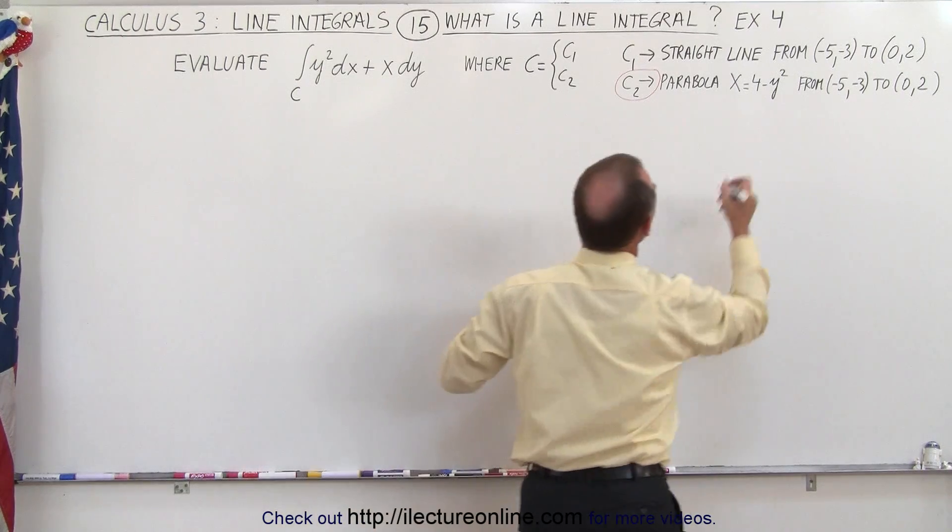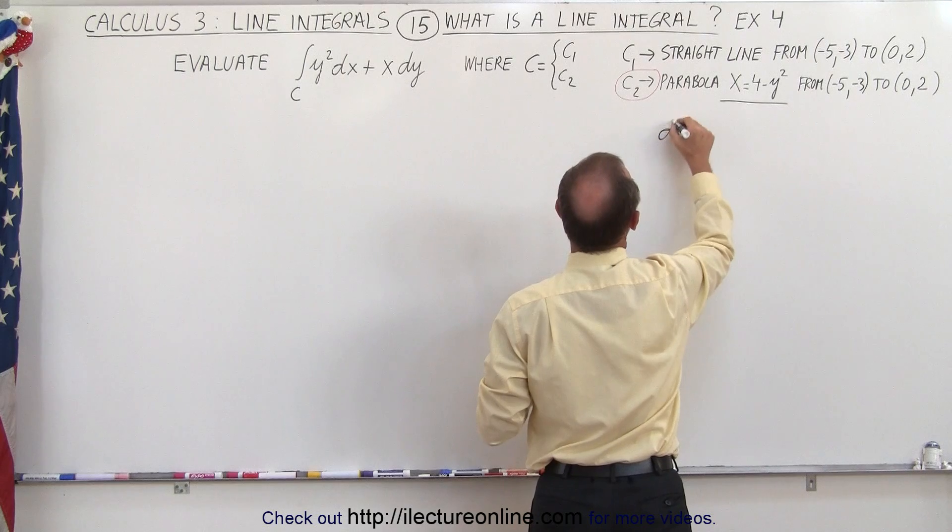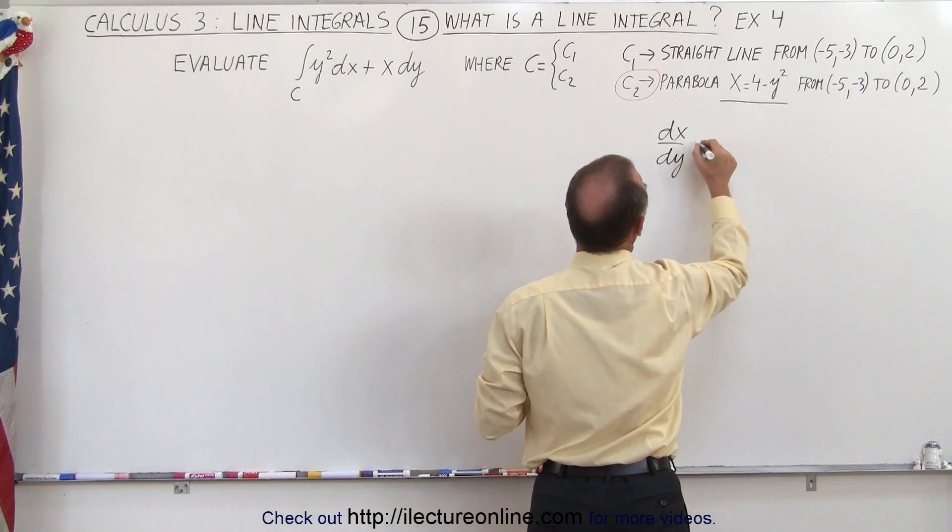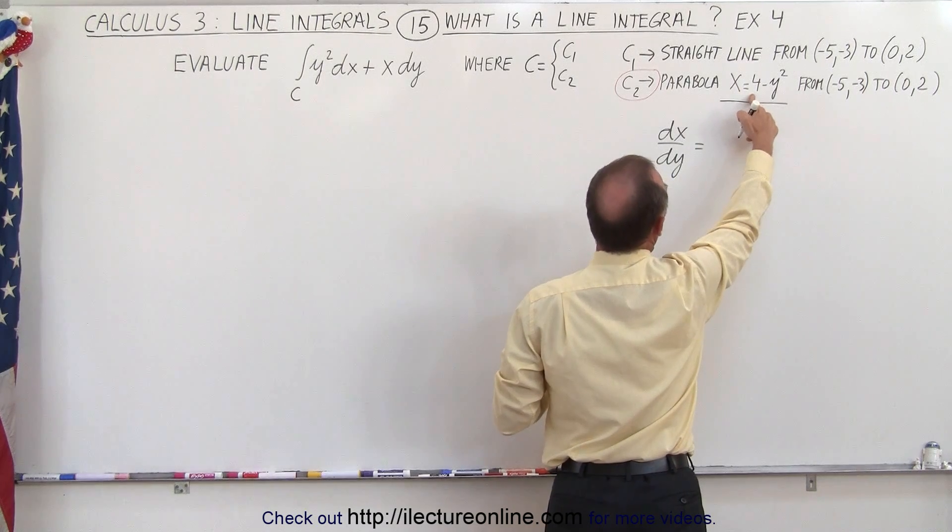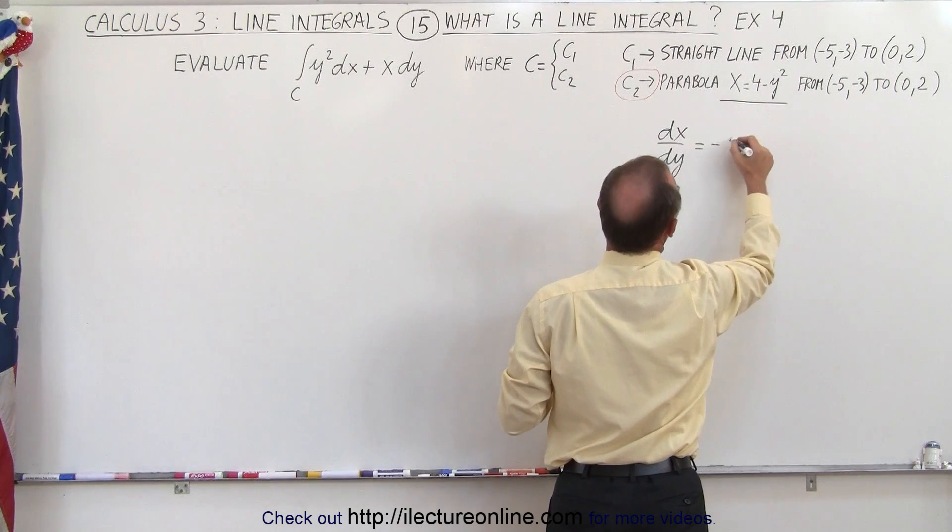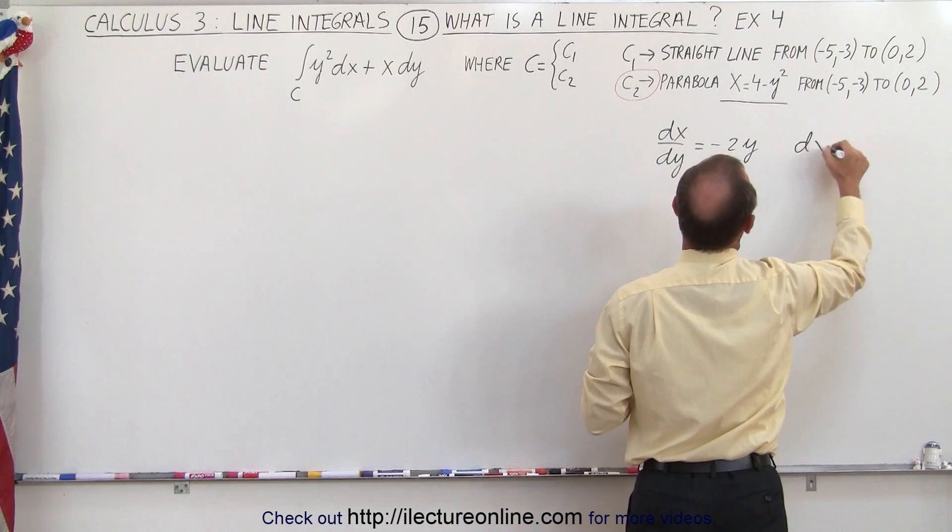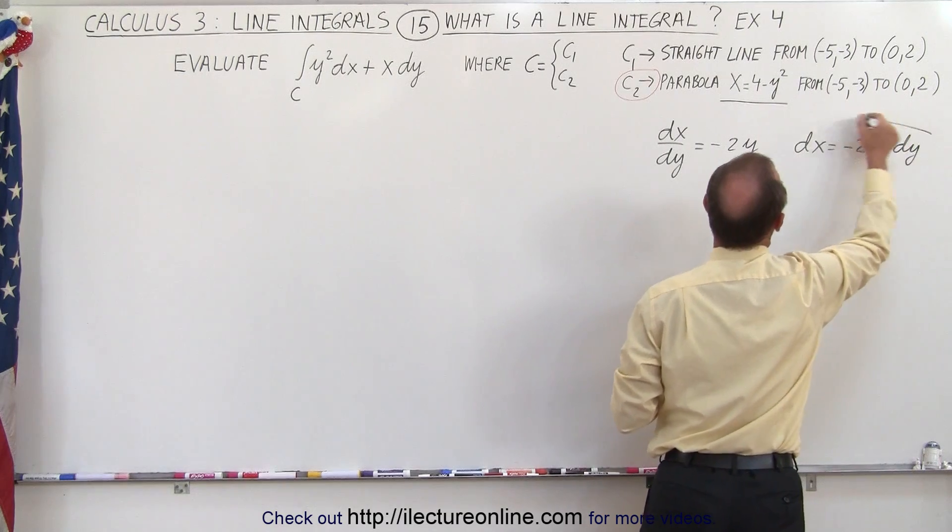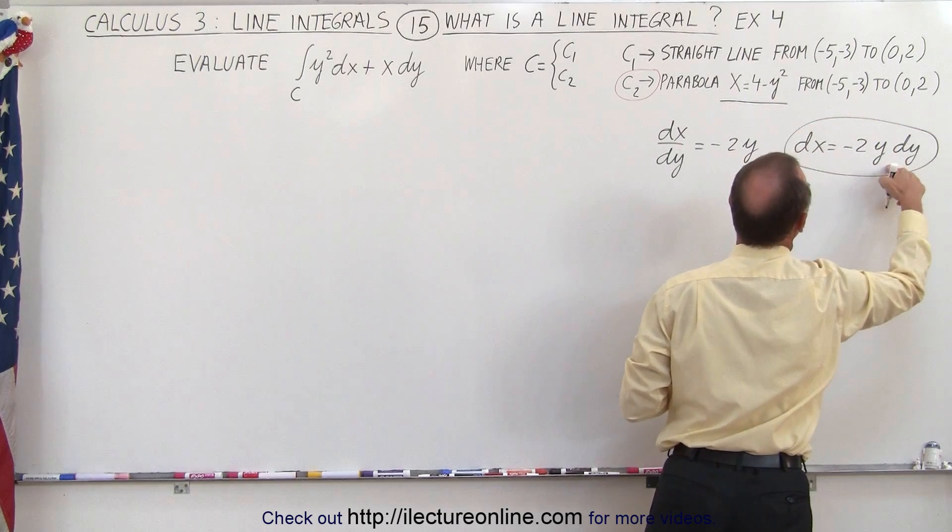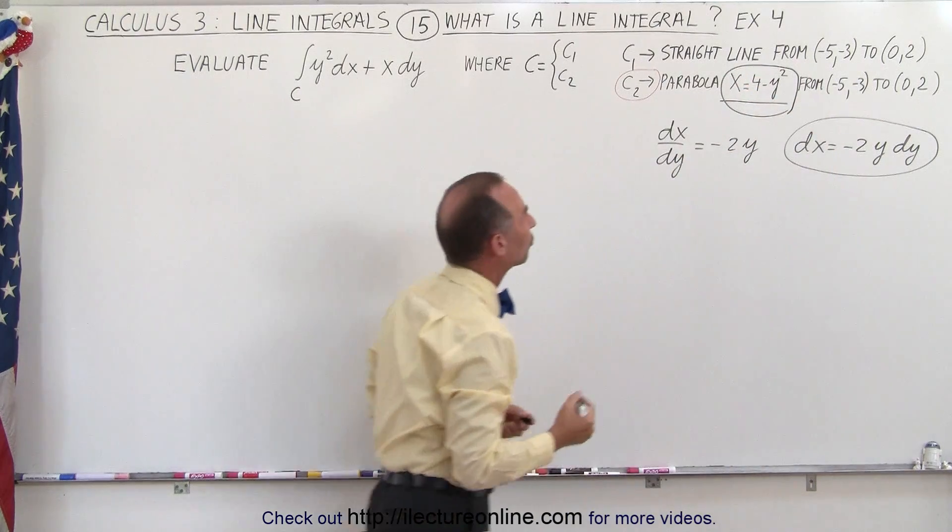Since x equals 4 minus y squared, we can write that dx/dy equals the derivative with respect to y, which is 0 minus 2y. Therefore dx can be written as minus 2y dy. Now we can replace dx by minus 2y dy and replace x by 4 minus y squared.